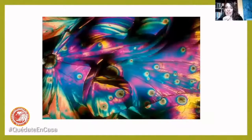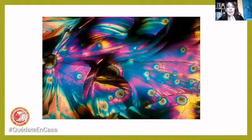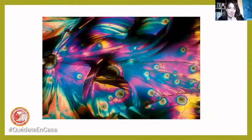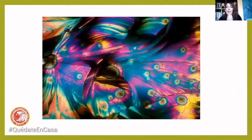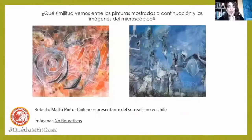Miren qué belleza esta. Esta es de una bebida. Pusieron una bebida que tenía un poquito de leche y la pusieron en el lente del microscopio y salió esta belleza. Miren qué parece. ¿Qué se les imagina a ustedes? ¿Qué parece que fuera? Parecen alitas de mariposas o plumas de pavo real. Hay mucha variedad de colores, mucha belleza. No hay nada más lindo. Inspira.